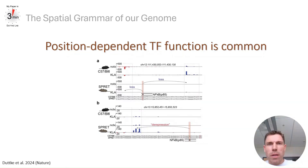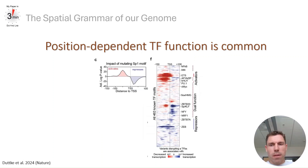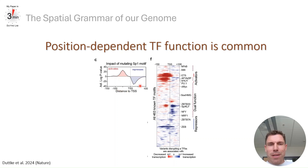We next leveraged the genetic variation of mouse strains to explore the abundance of this position-dependent transcription factor function. As shown here for SP1, mutations of SP1 sites upstream of the TSS were associated with repression upon mutation — therefore activating — while mutations of SP1 sites downstream of the TSS caused deep repression, and were therefore associated with a repressive function.